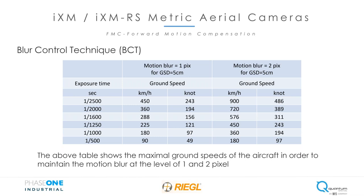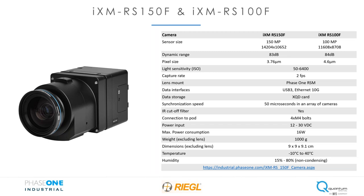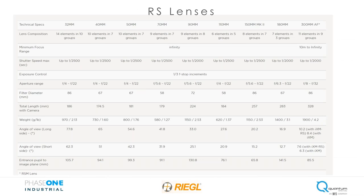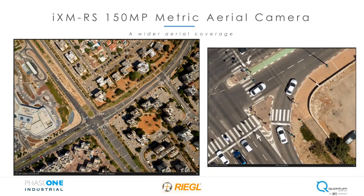Moving on to the IXM RS series: there are two cameras within this series — the 150 megapixel and the 100 megapixel. The 150 megapixel is most common, but there are use cases for the 100 as well. You have a 14,000 pixel cross-track with the 150 megapixel. We offer lenses from 32 millimeters to 300 millimeters — Phase One sales managers can help configure the right lens and camera for your use case. Here's a quick snapshot of a full-extent 150 megapixel image of an intersection with a zoomed-in area.